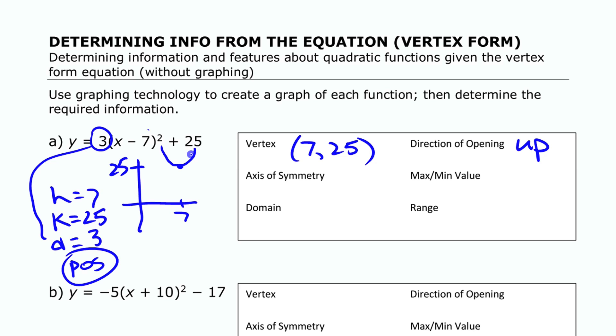Now once we have that we can get a lot of our other information here. Our axis of symmetry is just a line that runs vertically through the vertex. The equation of that axis of symmetry is just x equals 7.